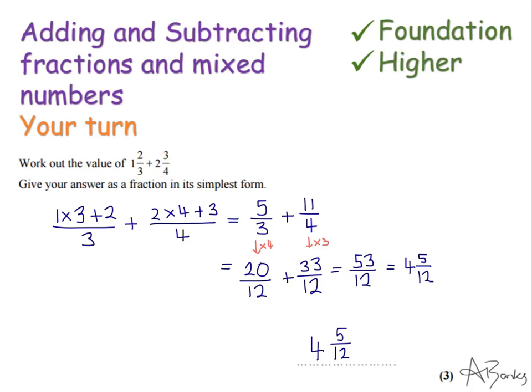And now here it says give your answer as a fraction in its simplest form. And you might be tricked into thinking, well that already is in its simplest form, but it's not. When it says simplest form, if you can change it into a mixed number, you should. That is a simpler form than the improper fraction version. So you have to change it into a mixed number. And 12 goes into 53 four times. That's 48 with a remainder of 5. So it's 4 and 5 twelfths.